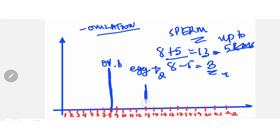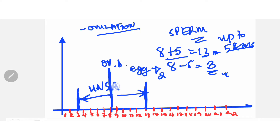From day 3 up to day 13 of your cycle — as shown here on the chart — these are the unsafe days. If you don't want to conceive, avoid intercourse during this window. However, if you do want to conceive, these are the days to target for fertilization. These are the unsafe days within this range.